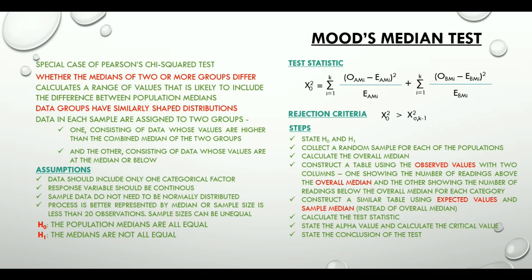Next two steps are very important. We construct the table using the observed values with two columns. One showing the number of readings above the overall median and the other showing the number of readings below the overall median for each category. Then we construct a similar table using expected values and sample median instead of overall median.